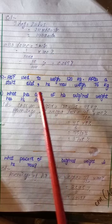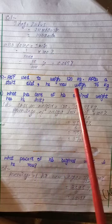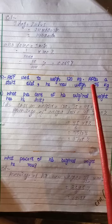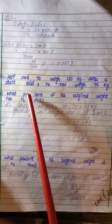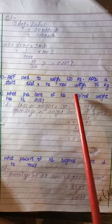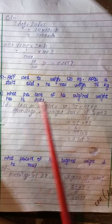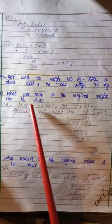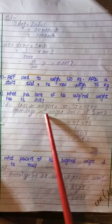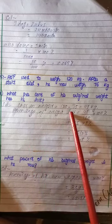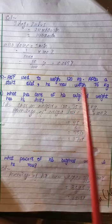Now, Question number 5: Atif used to weigh 120 kg. After a strict diet, he now weighs 75 kg. What percent of his original weight was lost? Weight loss: 120 minus 75, which equals 45 kg.